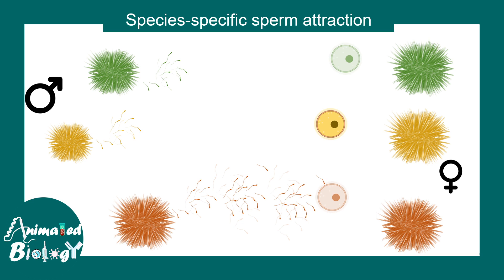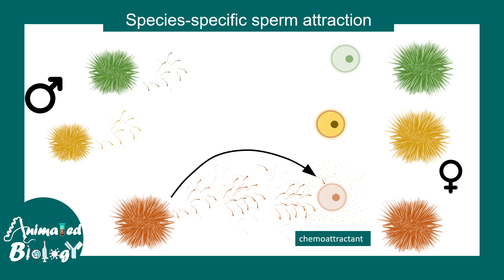The ovum of a particular species secretes certain molecules called chemoattractants to attract the sperm. In response, the sperm undergoes a process called chemotaxis, meaning its motility is influenced by these secreted molecules.